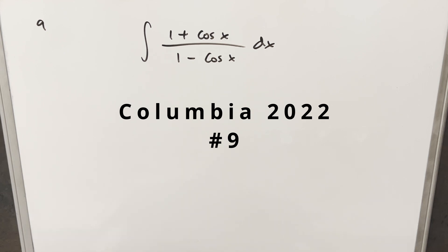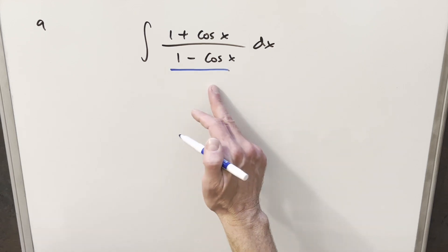We have the integral of 1 plus cosine x over 1 minus cosine x dx. Okay, when I look at this, actually two methods come to mind. There's a really straightforward way where we take the denominator and we just multiply it by the conjugate.